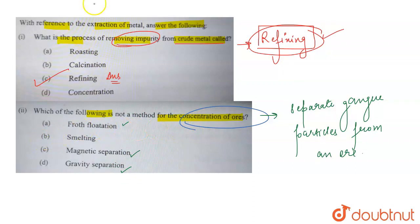But if we talk about smelting, then smelting is not a method for the concentration of ores. Option B will be the correct answer because smelting is actually the process of reduction in the presence of carbon.